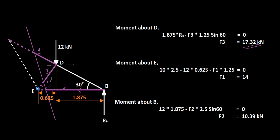Moving on to point E: F3 and F2 have zero moment about E, but F1, the 12 kN load, and RB all have moments. The distance to F1 is 1.25, the distance to the 12 kN force is 0.625, and the distance to RB is 2.5. RB = 10 kN creates a counterclockwise (positive) moment; the 12 kN and F1 create clockwise (negative) moments. The equation is: 10 × 2.5 − 12 × 0.625 − F1 × 1.25 = 0, giving F1 = 14 kN. The positive result confirms the assumed direction.